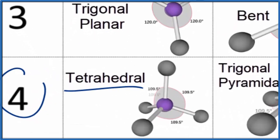Tetrahedral. So with respect to this carbon, we have a tetrahedral molecular geometry and the bond angle would be 109.5.